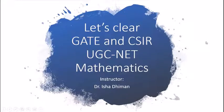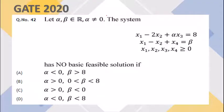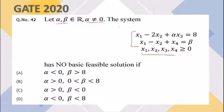Hello, good evening everyone. Welcome to the question series on Gate and UGC NET. Today we are taking linear programming problems. This question was asked in Gate 2020. We have two parameters alpha and beta, both real numbers, with alpha non-zero. We are given a system of two linear equations with four non-negative variables. The question asks: for which combinations of alpha and beta does the system have no basic feasible solution?